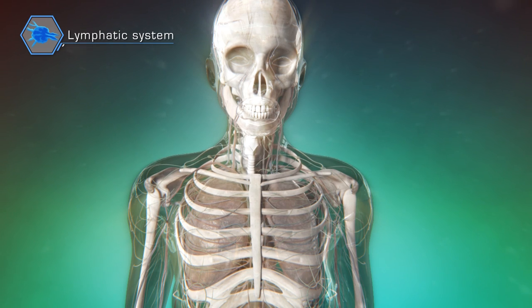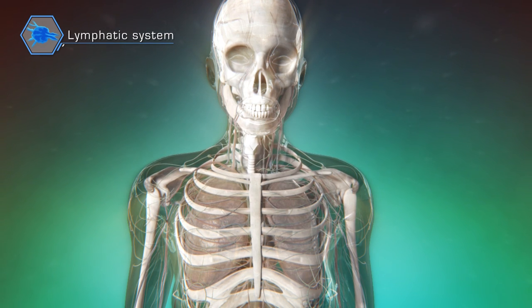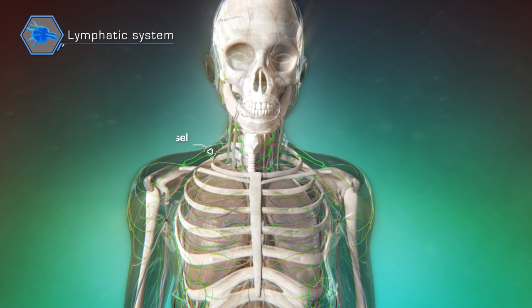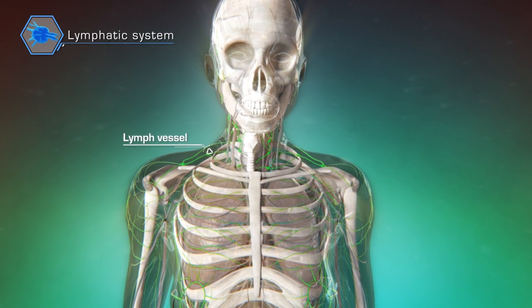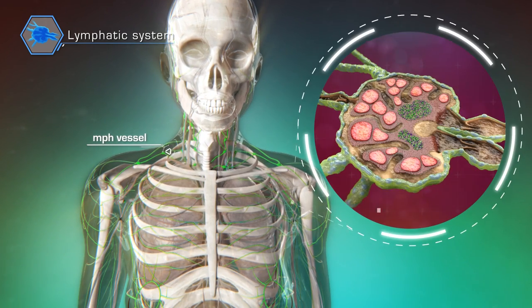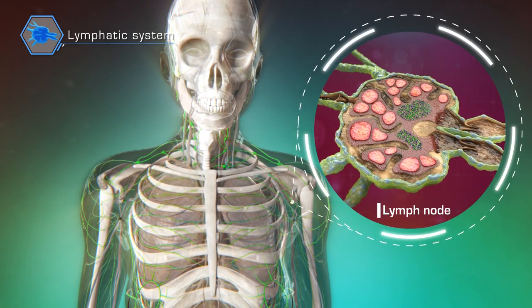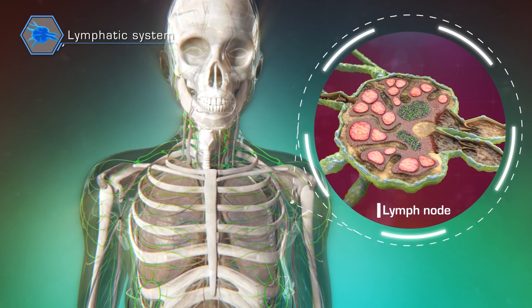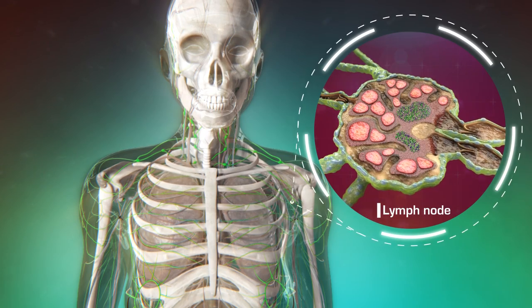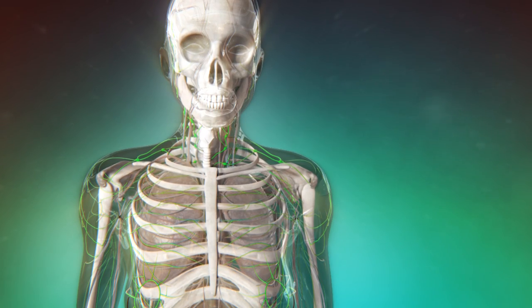The lymphatic system is part of the circulatory system and consists of lymphatic vessels and the lymph nodes. This structure is a vital part of the immune system.